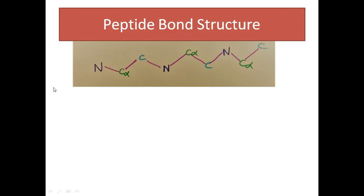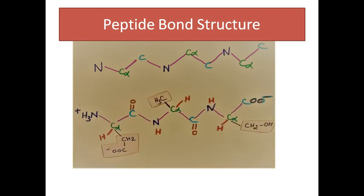Remember this concept: write the backbone as N-Cα-C, N-Cα-C, in repeating order. In the repeating order, write N-Cα bond, and wherever Cα is present, you attach the hydrogen group and the R group. The general formula for any amino acid is R-C-H-NH-COOH. Near the Cα, you write the hydrogen atom and the R group.